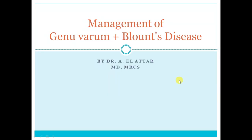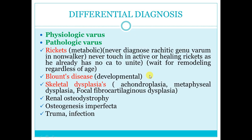Assalamu alaikum. Insha'Allah, today our lecture is on Genu Varum and the Blount disease. The aim of this lecture is to differentiate between physiological and pathological causes like rickets, Blount, and skeletal dysplasia. You have to know some types of dysplasia causing varus, like achondroplasia and metaphyseal dysplasia.